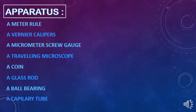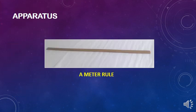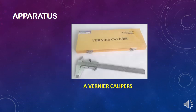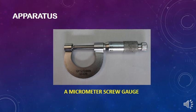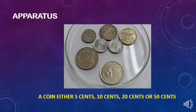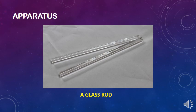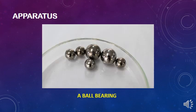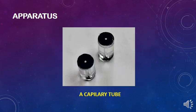List of apparatus. The apparatus required for setting up the experiment are a meter rule, a vernier calipers, a micrometer screw gauge, a traveling microscope, a coin either 5 cents, 10 cents, 20 cents or 50 cents, a rock, a ball bearing, and a capillary tube.